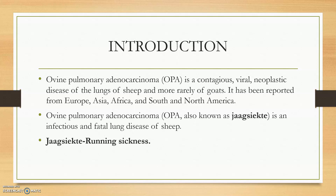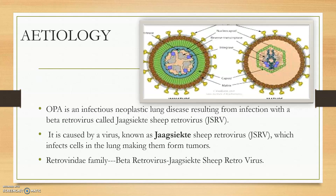It is also known as Jaagsiekte, because the animal will have a running sickness due to lung insufficiency. The etiological agent is the Jaagsiekte sheep retrovirus, belonging to the family Retroviridae and the genus Betaretrovirus. It may infect the cells and make tumours.